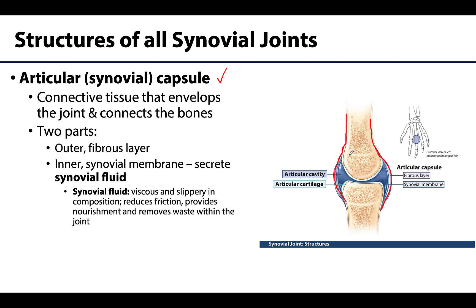Additionally, there is an inner synovial membrane, so the inner portion of the articular capsule is a synovial membrane that secretes synovial fluid into the joint cavity. Synovial fluid is an extremely slippery, viscous lubricant with a texture similar to raw egg whites. Functionally, synovial fluid plays a role in reducing friction at a joint, provides nourishment to the articular cartilage, and plays a role in removing waste from the joint cavity region.